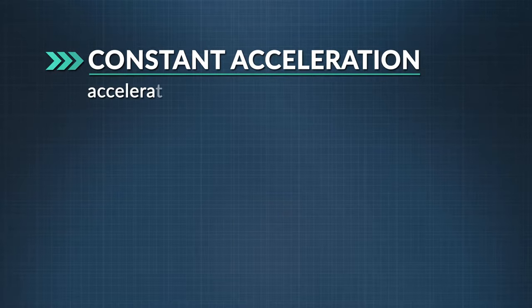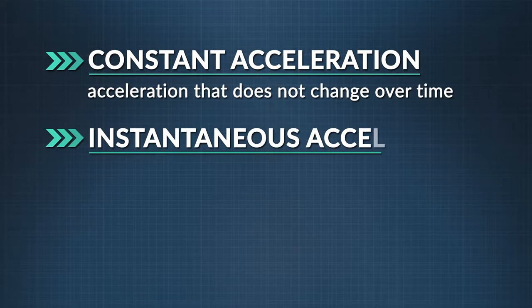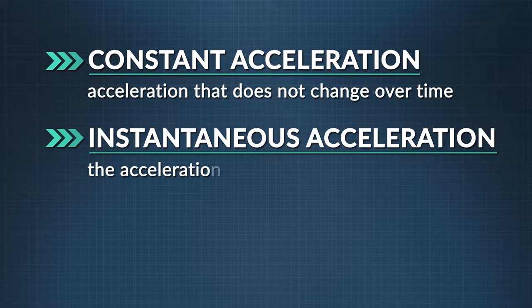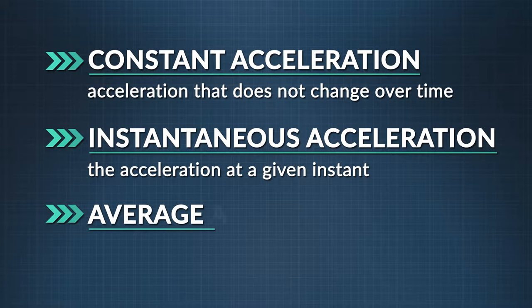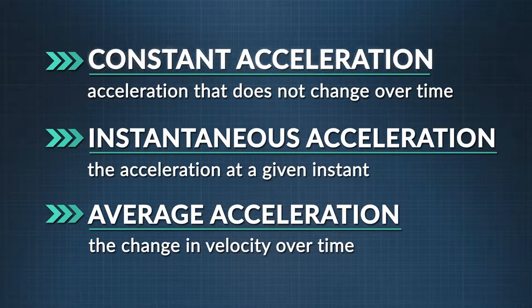We can use kinematic equations to solve problems for scenarios that have constant acceleration — when the acceleration isn't changing — instantaneous acceleration, which is the acceleration at a specific given moment in time, and average acceleration, the overall change in velocity over time over the course of an entire journey. In this physics course, all of our examples will have acceleration that is constant.